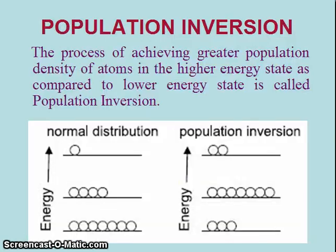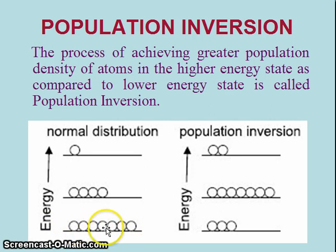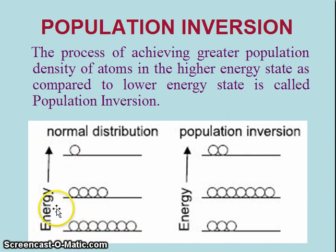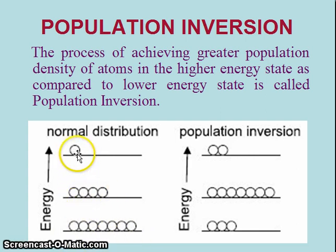Next is population inversion. What is population inversion? As you can see in this diagram — we already know that every atom achieves stability, so most atoms are in the ground state. This is the normal distribution: energy versus number of atoms. The number of atoms in the ground state is higher, while the number in excited states is very low. This is the normal distribution of atoms.